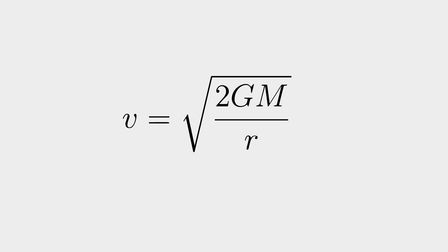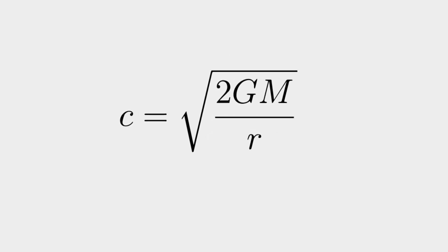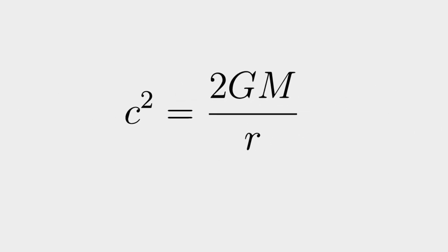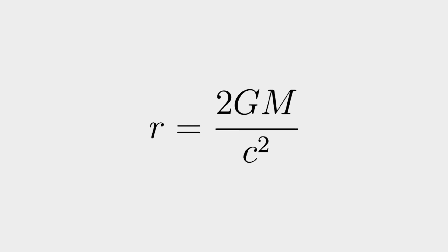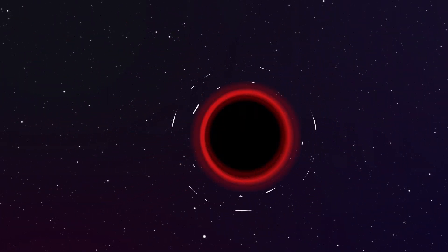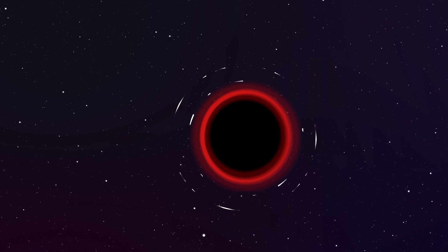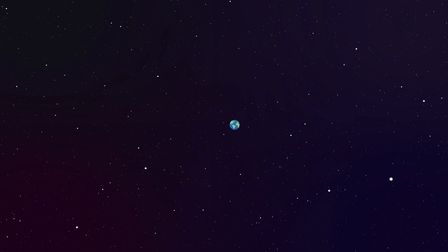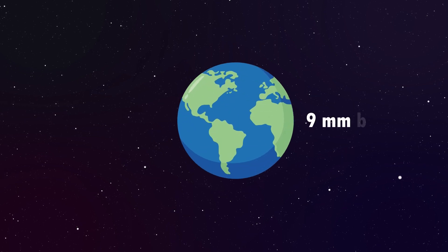Using our formula for escape velocity, we can even compute what should be the size of the planet for it to become a black hole. All you have to do is insert the value of the speed of light in this equation and express the radius in terms of the mass of the planet. The radius you obtain is called the event horizon of a black hole, and if the mass of the planet is concentrated within this, it turns into a black hole. For a planet of the mass of Earth, it has to be the size of a nine-millimeter ball to become a black hole.